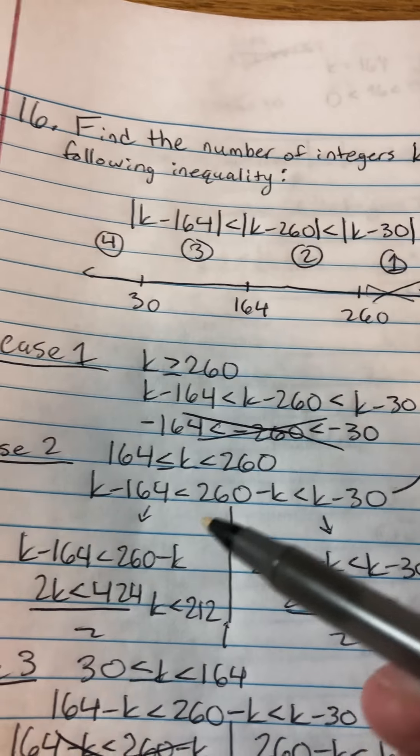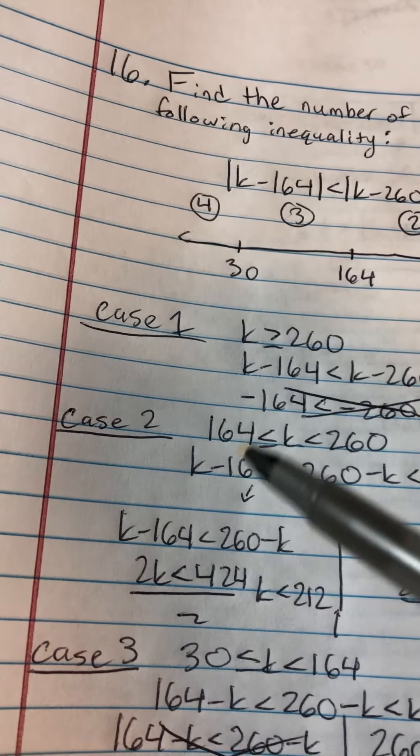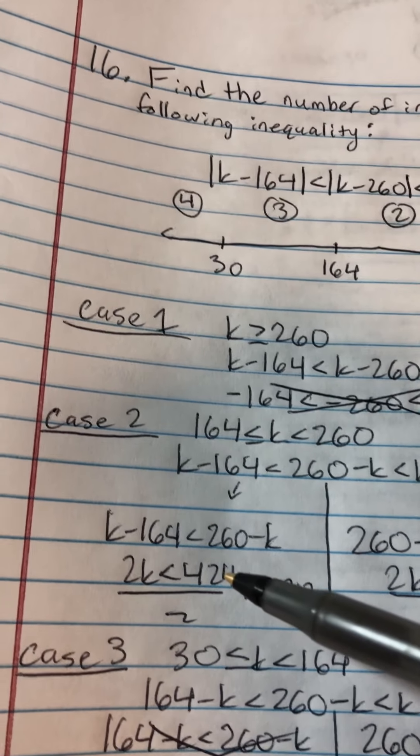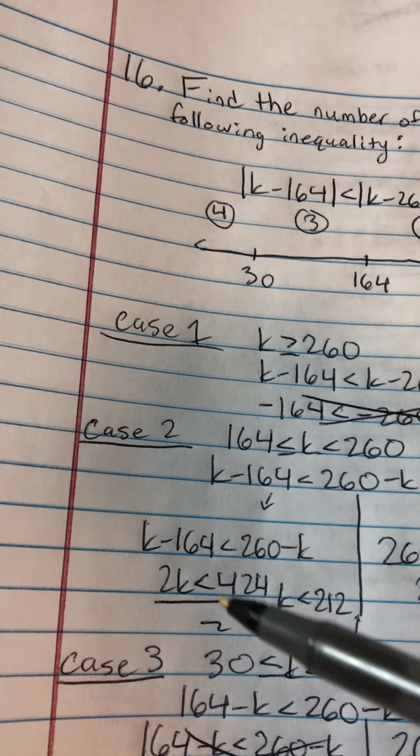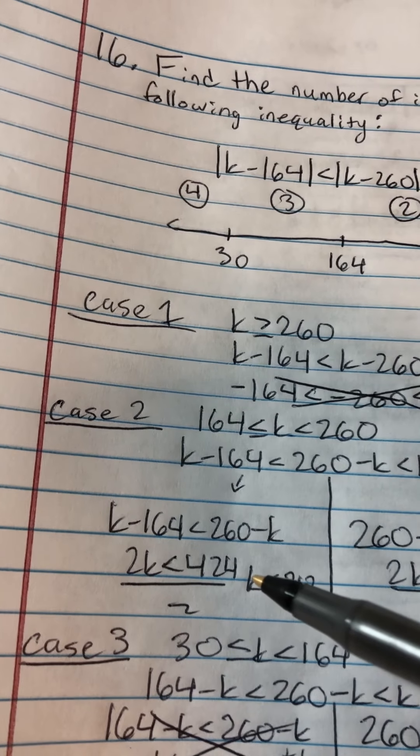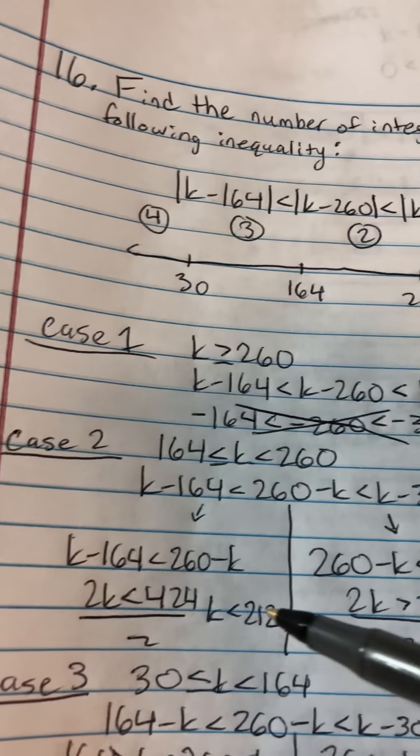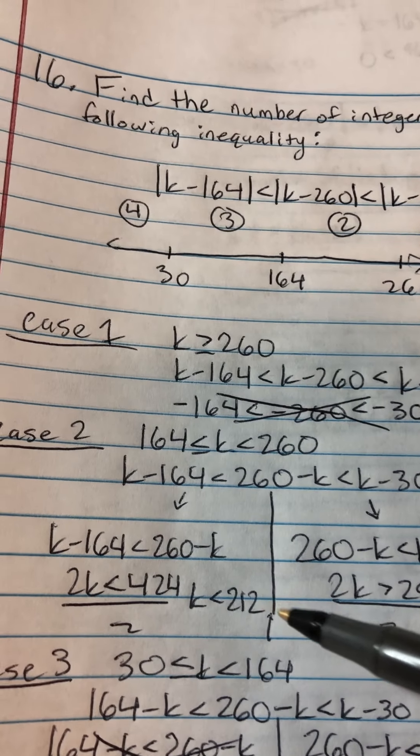So you can get two equations. I started with k minus 164 is less than 260 minus k. And then I brought the k over, so 2k is less than 424. I divided by 2 on both sides, and I got k is less than 212.